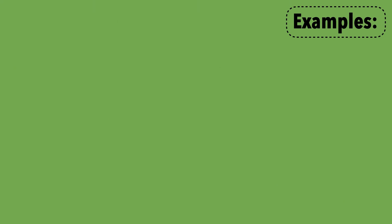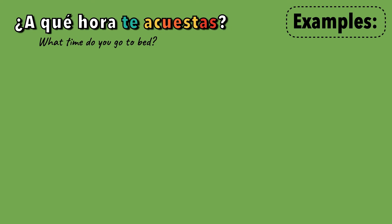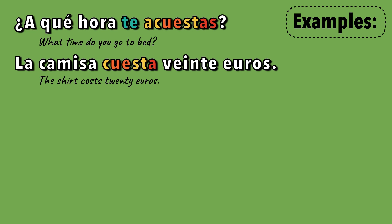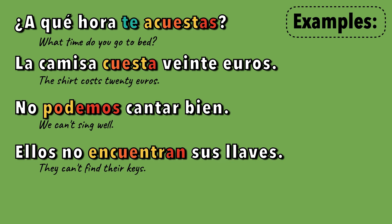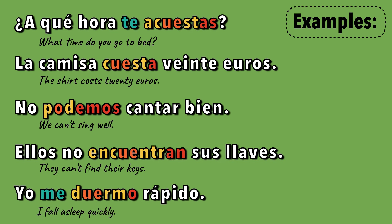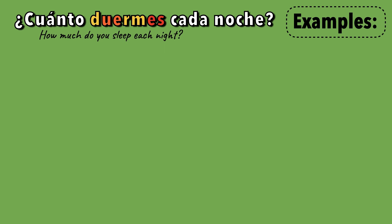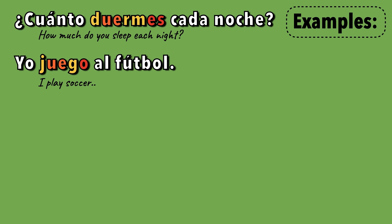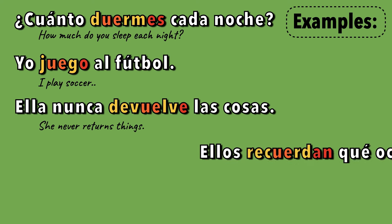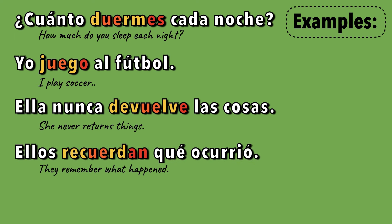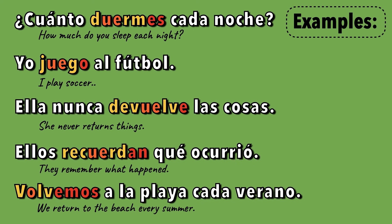And here are those verbs in sentences in the present tense. ¿A qué hora te acuestas? La camisa cuesta 20 euros. No podemos cantar bien. Ellos no encuentran sus llaves. Yo me duermo rápido. ¿Cuánto duermes cada noche? Yo juego al fútbol. Ella nunca devuelve las cosas. Ellos recuerdan que ocurrió. Volvemos a la playa cada verano.